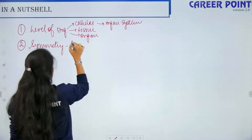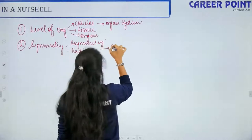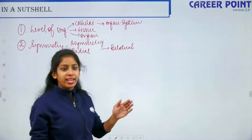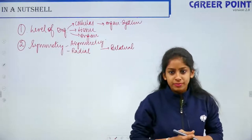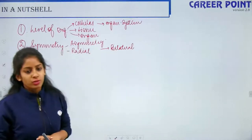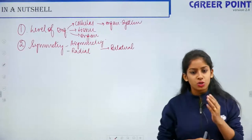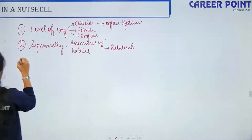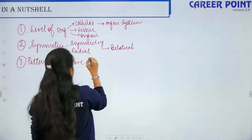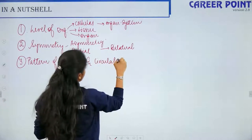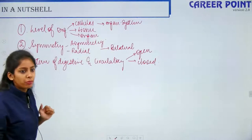There are three types of symmetry. First is asymmetry, when you get irregular pieces. Second is radial symmetry. Third is bilateral symmetry — bilateral is when you get two identical right and left halves, radial is when you get two identical halves from any plane. The third basis of classification is the pattern of the digestive and circulatory systems. Circulatory system is described as open or closed.